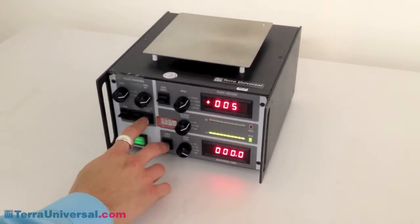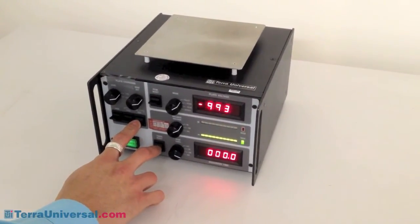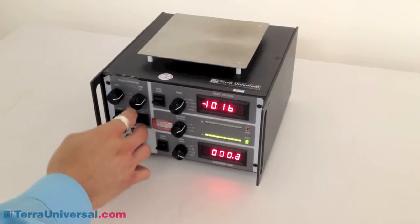Next, we will look at the decay rate for negative ions. Once again, the surface is charged to 1,000 volts and the timer started.